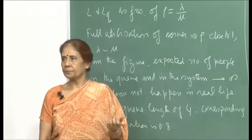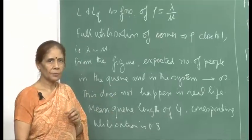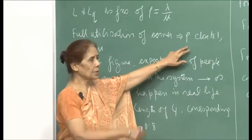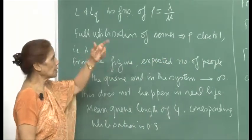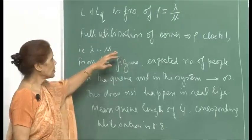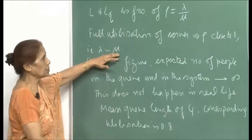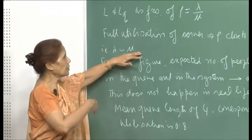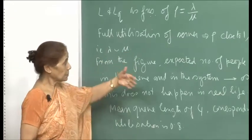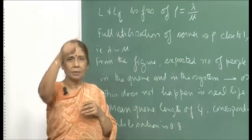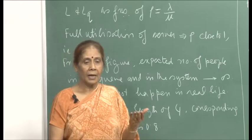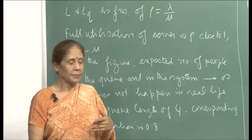You can see from the figure on the screen that as you approach full utilization of the server — that means if ρ is close to 1 — then the graphs for L and Lq both go to infinity. When λ is close to μ, that is the mean arrival rate and mean service rate are almost the same, the expected number of people in the system and in the queue will go to infinity. Both curves are approaching the vertical line. L is the average number of people in the system and Lq is the average number of people in the queue, which are going to infinity.